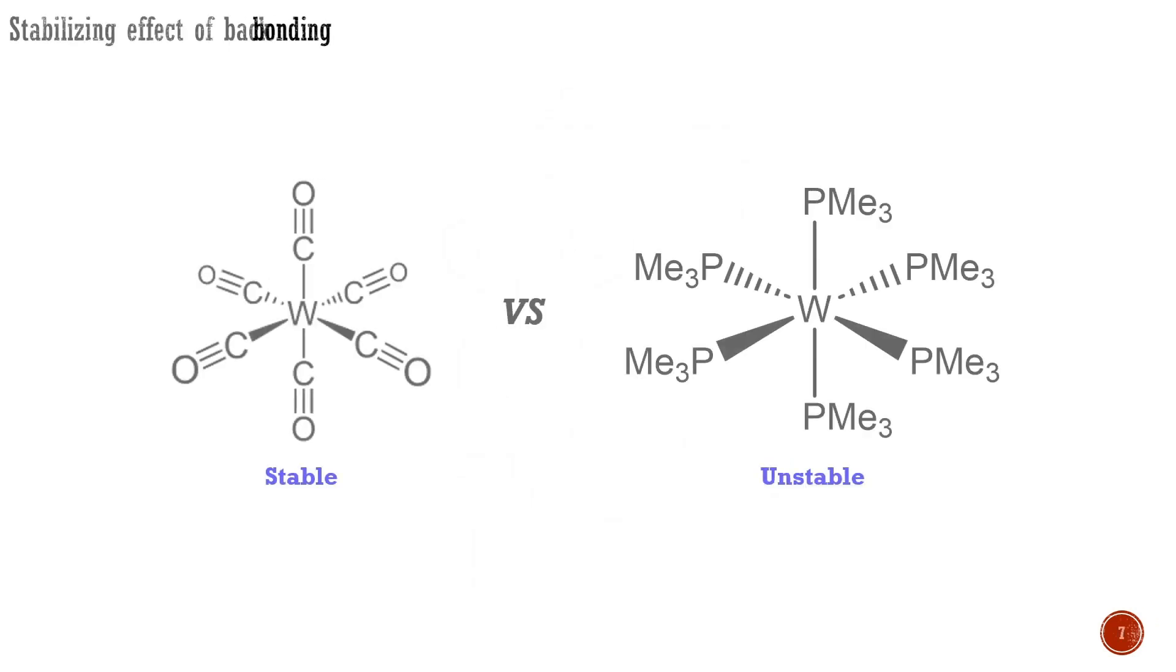By backbonding, the metal can get rid of some of its excess electron density and delocalize it over the π-acid ligands. In tungsten hexacarbonyl, backbonding is so effective that the compound is air-stable and relatively unreactive. The carbon monoxide ligands have so stabilized the metal electrons that they have no tendency to be abstracted by an oxidant such as air.